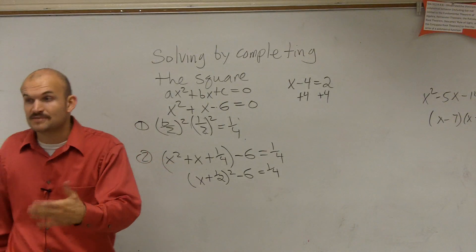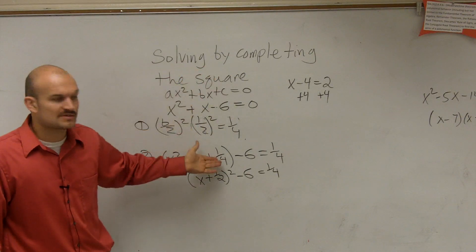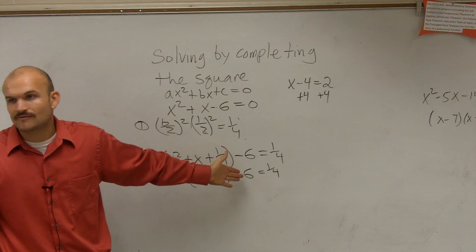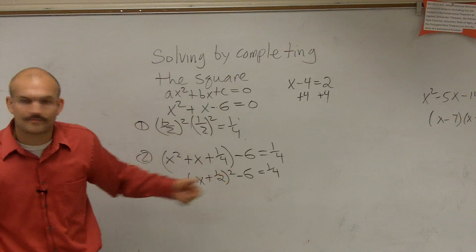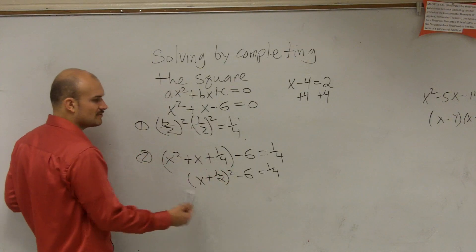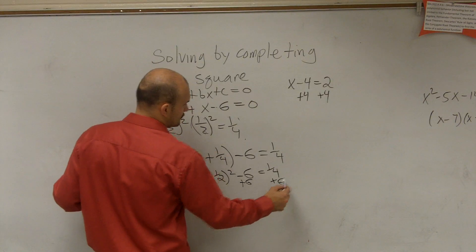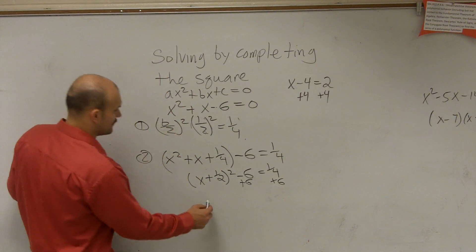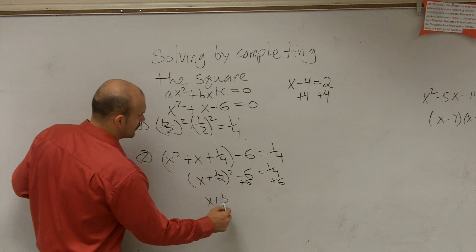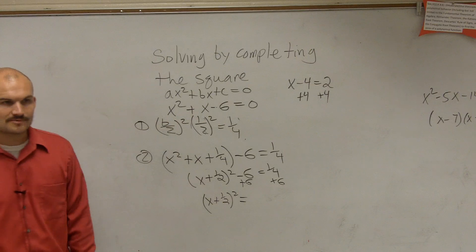So therefore, when you have something that's prime, now you have a way that you can create a perfect square trinomial to solve. So therefore, there is really no thing as prime. We can always find the values of it. So therefore, now we just use inverse operations. So you add 6. Therefore, you have x plus 1 half squared equals 6 plus 1 fourth.